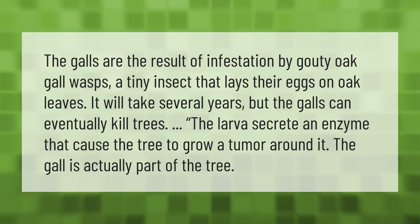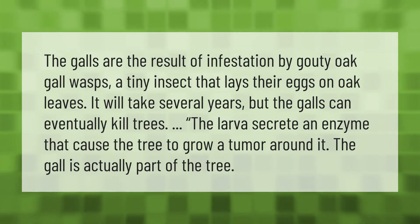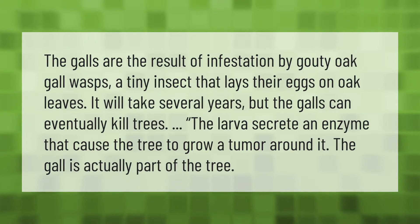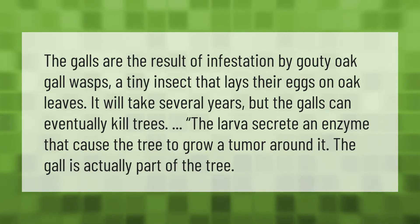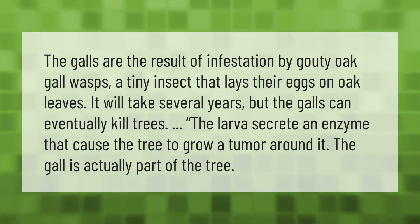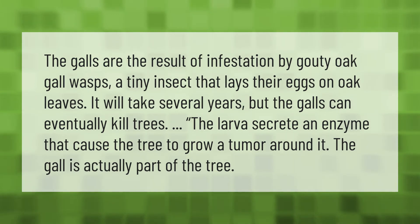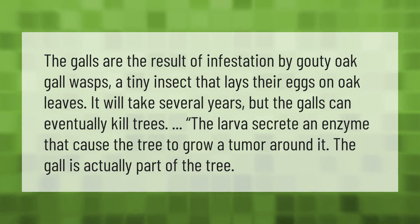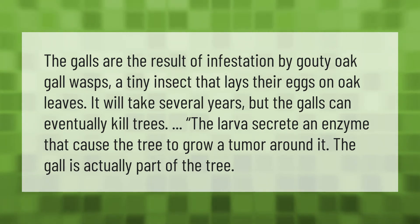The galls are the result of infestation by gouty oak gall wasps, a tiny insect that lays their eggs on oak leaves. It will take several years, but the galls can eventually kill trees. The larvae secrete an enzyme that causes the tree to grow a tumor around it — the gall is actually part of the tree.